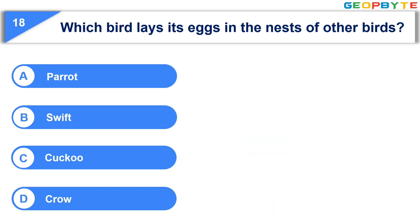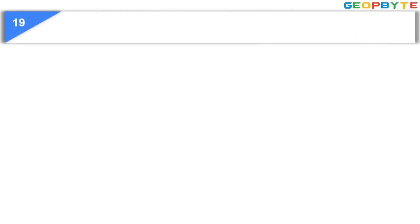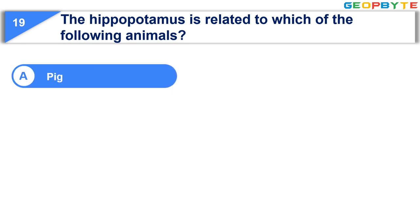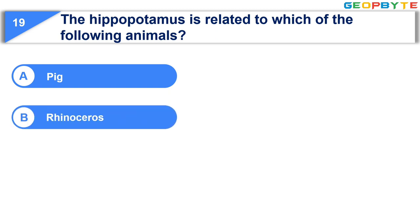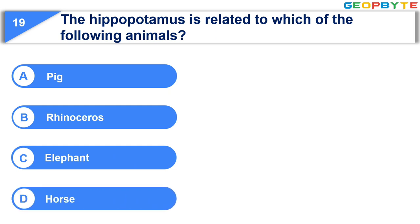Your time is up and the correct answer is Option C: Cuckoo. The next question is: The hippopotamus is related to which of the following animals? Option A: Pig. Option B: Rhinoceros. Option C: Elephant. Option D: Horse. Your time starts now.